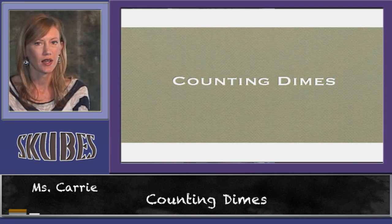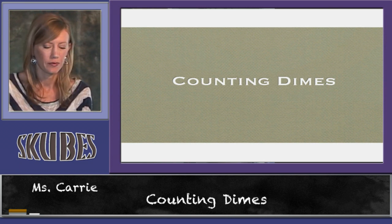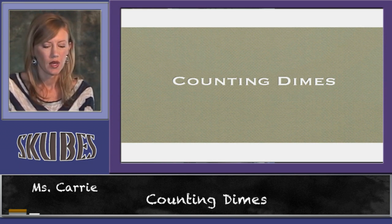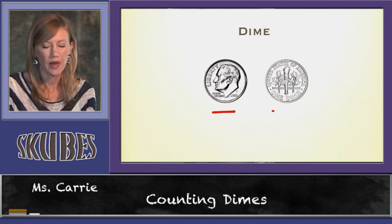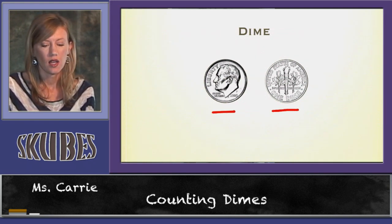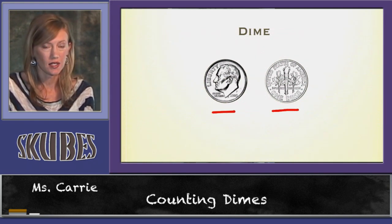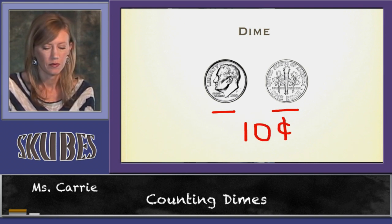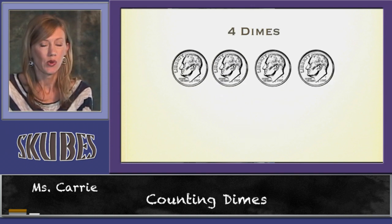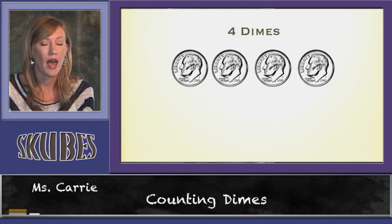This lesson is on counting dimes. Dimes have a front side and a back side, and one dime is equal to ten cents. Counting by dimes is simple. We know that one dime is ten cents, so as we count up, we count by tens.